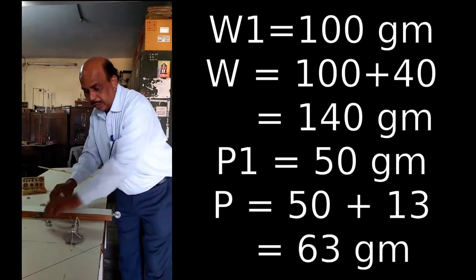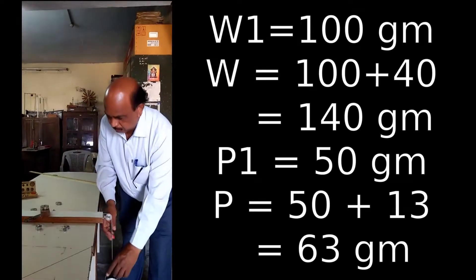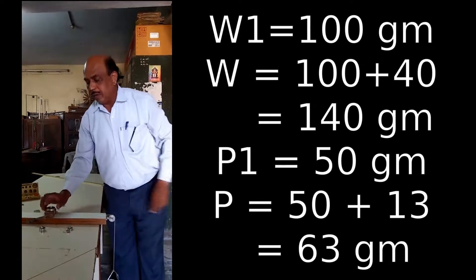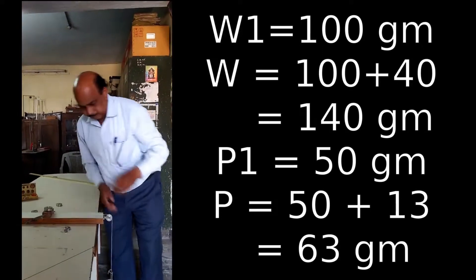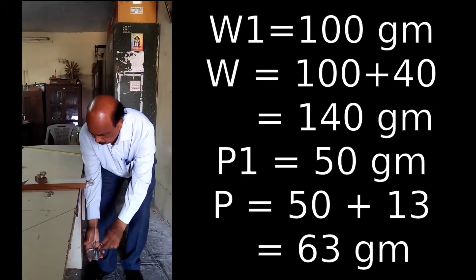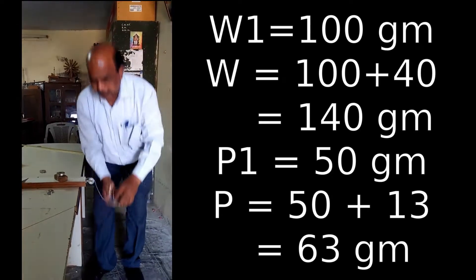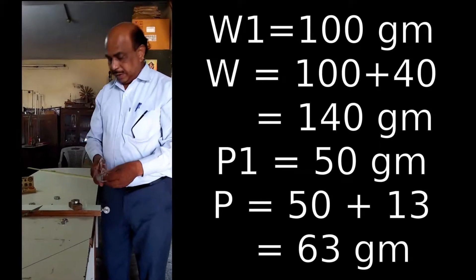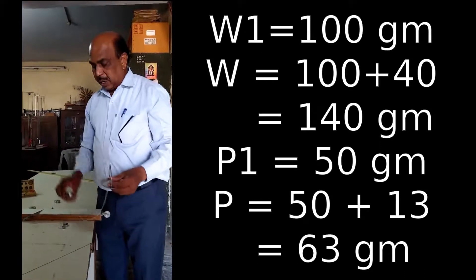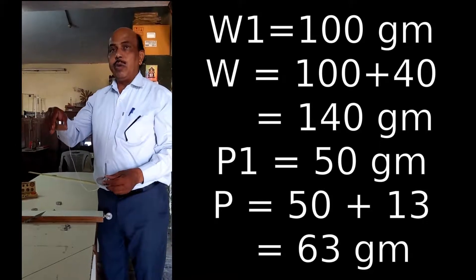Then, the third reading. Add 100 grams plus 40, it means 140. Therefore, 13 plus 50, it means 63. P is 63, W is 140.